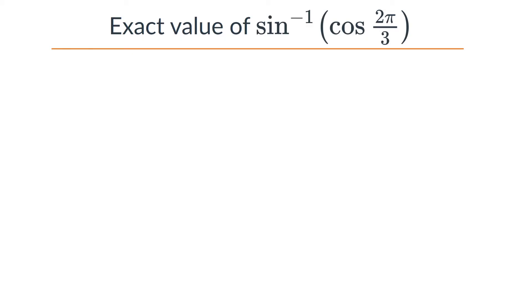In this problem, we find the exact value of sine inverse of cosine(2π/3). Since we have two different trigonometric functions — sine and cosine — the cancellation law doesn't work for problems like this.